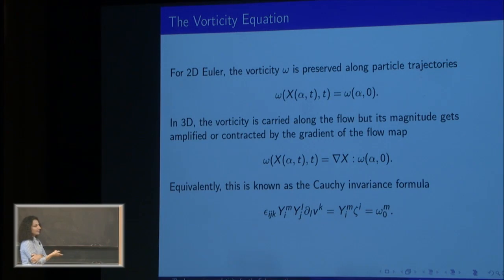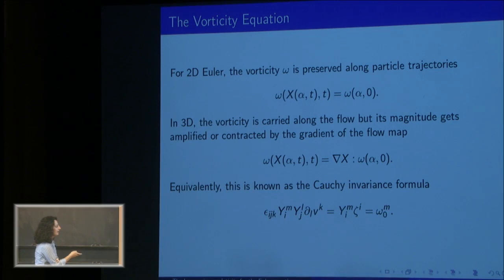If you write things in terms of the Lagrangian variables, this is an equivalent way of writing the Cauchy invariance formula, which gives us a nice vorticity equation. We can express this equation in terms of the initial vorticity. Here we sum over i, j, k, and l, and epsilon is the sign of the mapping that takes 1, 2, 3 to i, j, k.